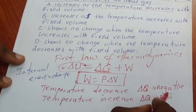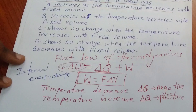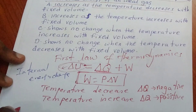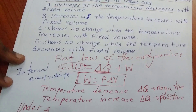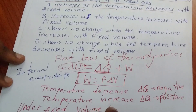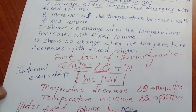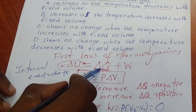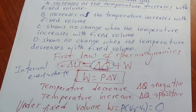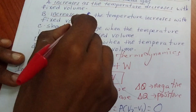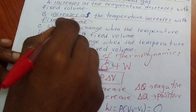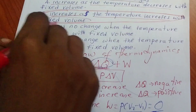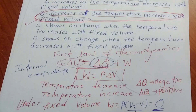At fixed volume, when temperature increases, heat is positive and internal energy increases. When temperature decreases, heat is negative and internal energy decreases. So internal energy increases with temperature increase at fixed volume.